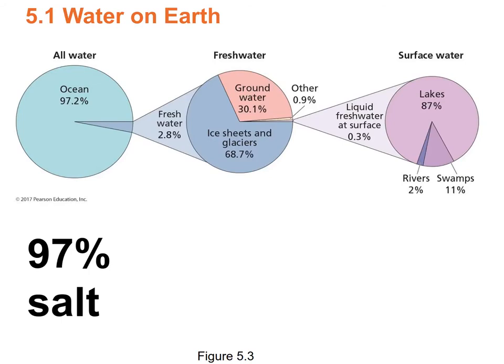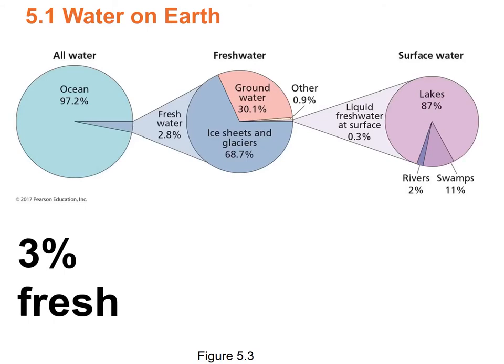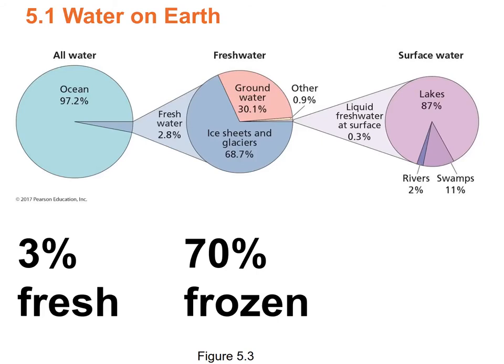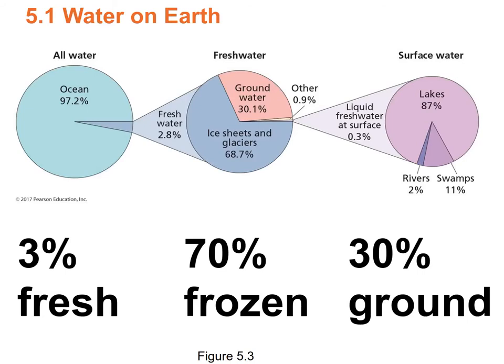Here's the breakdown of water on Earth. 97% of all the water is salty — it's in the ocean. That leaves us with about 2.78% that's fresh. Of that 3% that's fresh, about 70% is frozen in ice sheets and glaciers, and about 30% of the fresh water is in the ground — water you can get at with a well. The amount of liquid fresh water at the surface makes up just 0.3% of the 2.78% of all water on Earth.